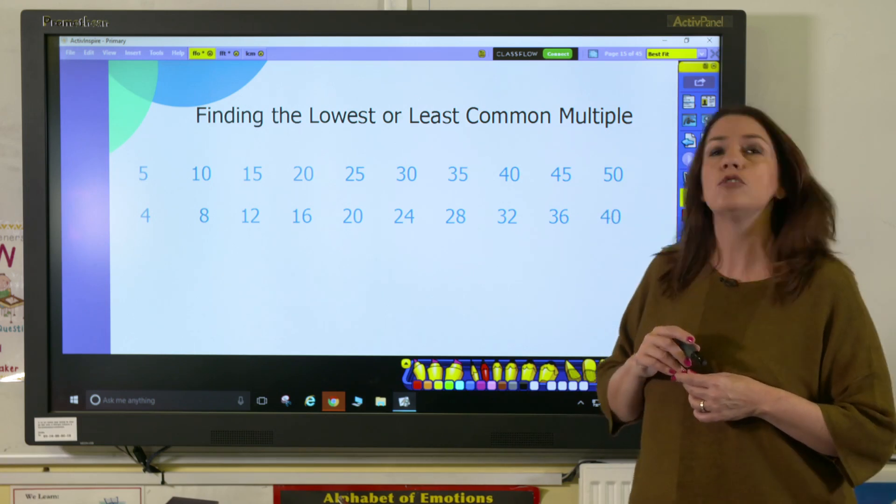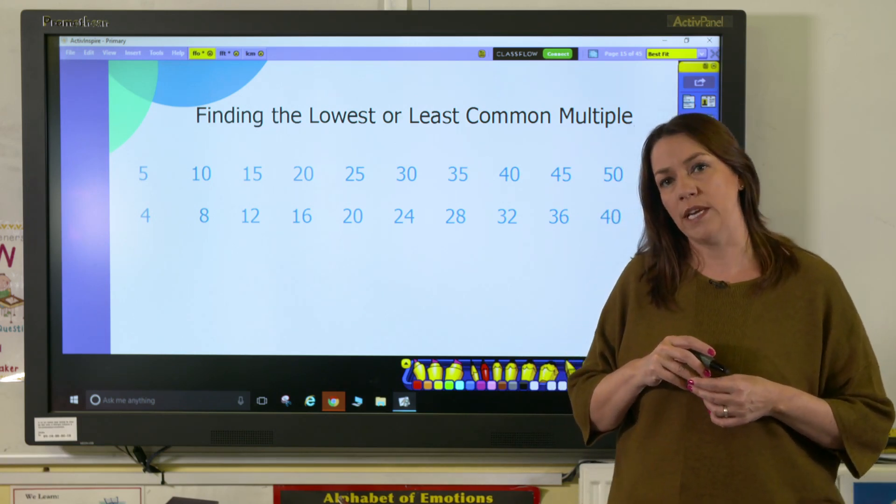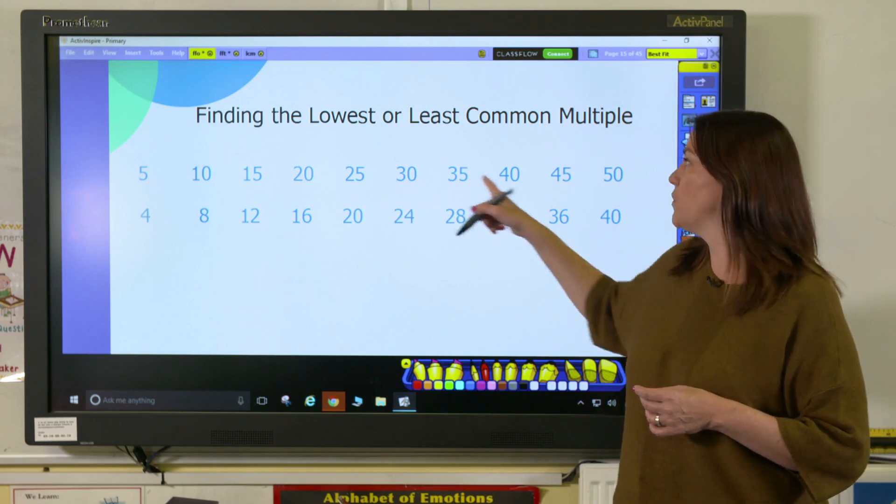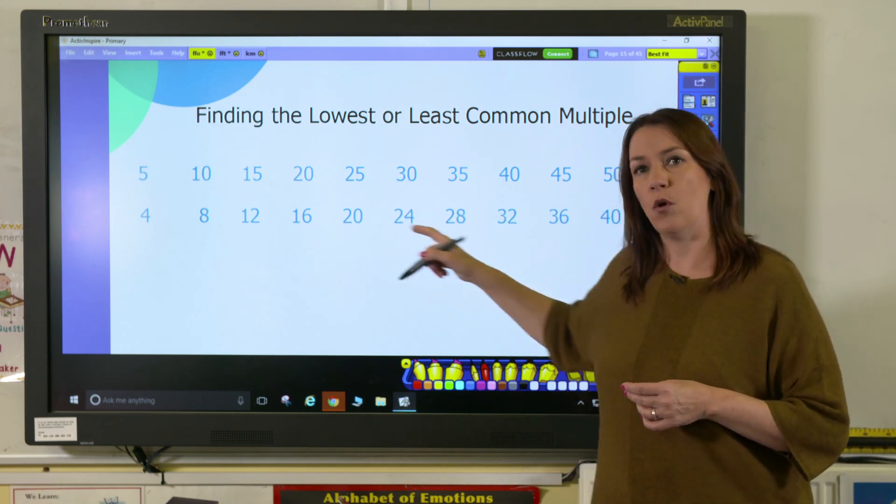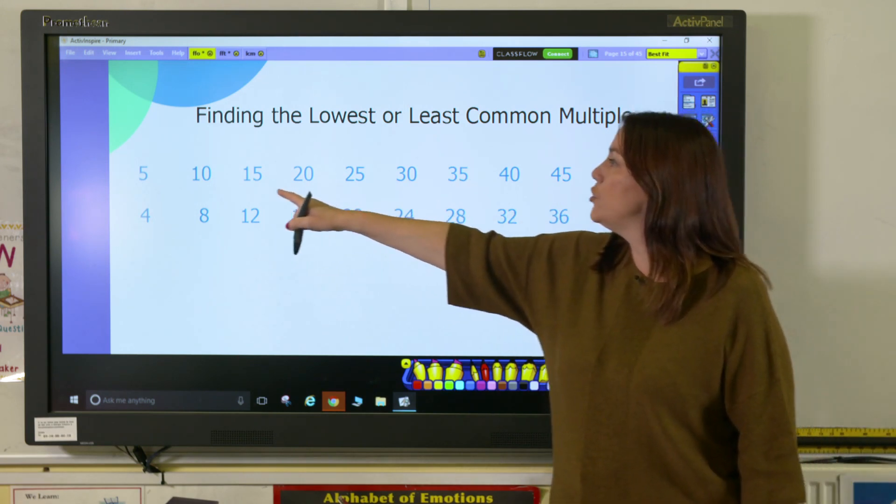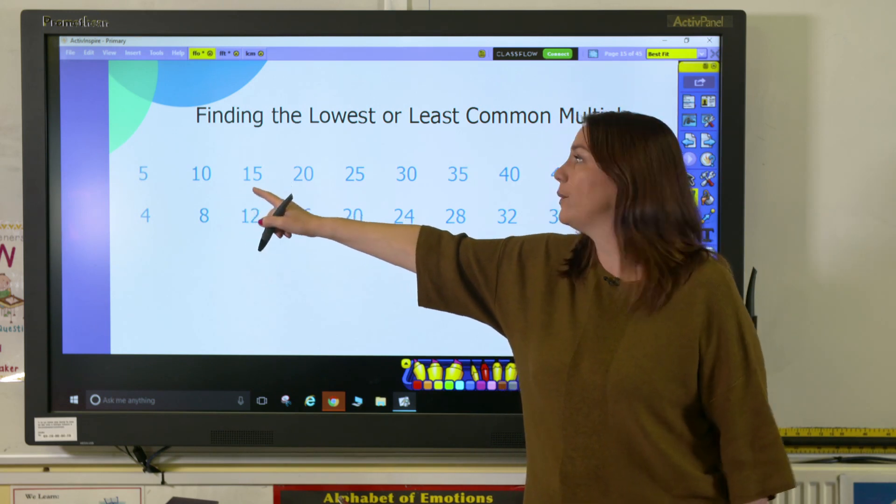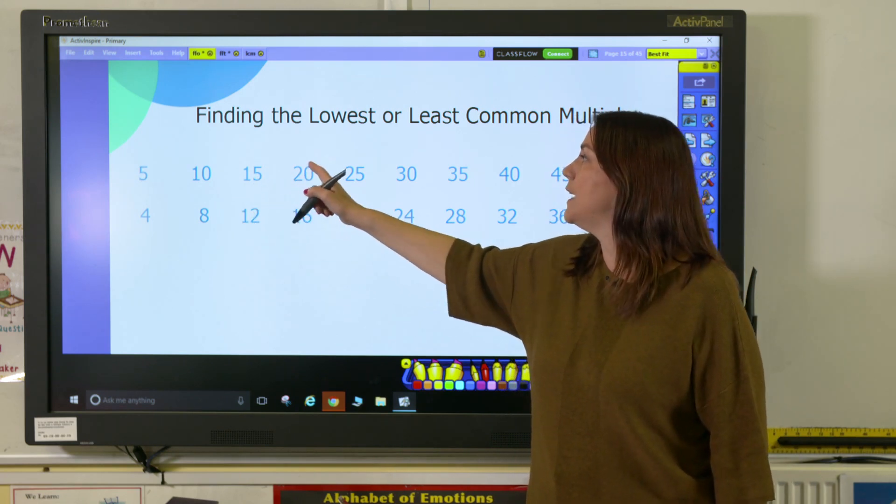Here, we want to find the lowest common multiple of 5 and 4. So I've listed the multiples of 5 and the multiples of 4, and you can see that there are two in common. The multiples of 5, we have 5, 10, 15, 20.